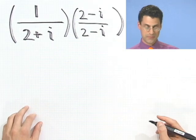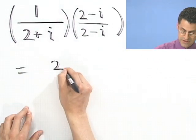So that would be 2 minus i, top and bottom. On the top, that's pretty easy. It's just 2 minus i.